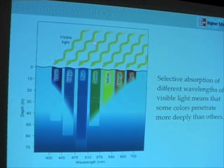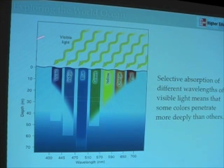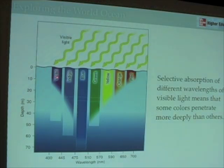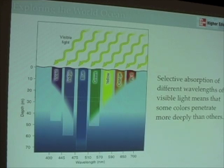If we look at the absorption of light as the different colors in the ocean, we get a graph that looks something like this — figure 7-29 in your book. Red light is absorbed very quickly. Violet light is also absorbed fairly quickly; it doesn't penetrate very deeply. As it turns out, red light is the most rapidly absorbed, and we get no red light below, on average, 15 meters. There's no red light deep in the ocean.